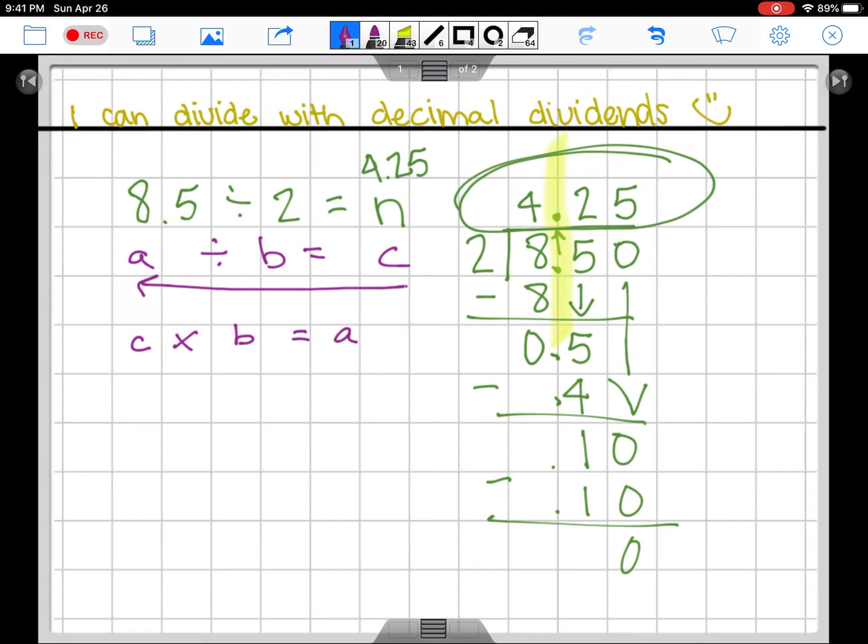So that c was 4.25, or four and twenty-five hundredths, multiplied by b—there it is—is two, and that should equal eight and five tenths.